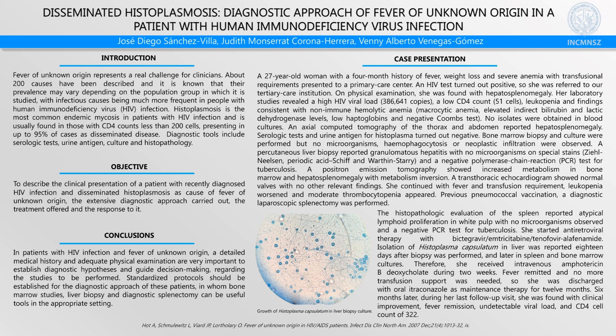Conventional blood cultures were sent but no microbiological isolates were obtained. Bone marrow aspirate, biopsy, and culture were performed where no microorganisms, hemophagocytosis, or neoplastic infiltration were observed. A percutaneous liver biopsy reported granulomatous hepatitis with negative polymerase chain reaction for microorganisms. A positron emission tomography reported increased metabolism in bone marrow and hepatosplenomegaly with inversion of metabolism.